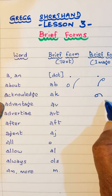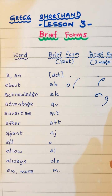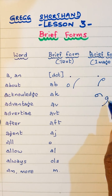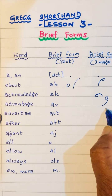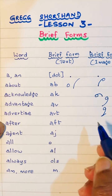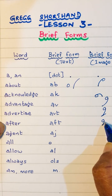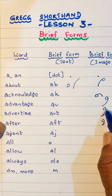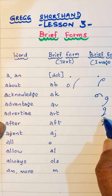Then 'advantage' is a-v, a-v. In my previous Lesson 1, I have discussed about the consonants — you can follow if you can't remember those strokes. 'Advertise' is a-v-t, a-v-t. 'After' is a-ft, a-ft. This is short — 'after' is a-ft, 'advertise' is a-v-t.